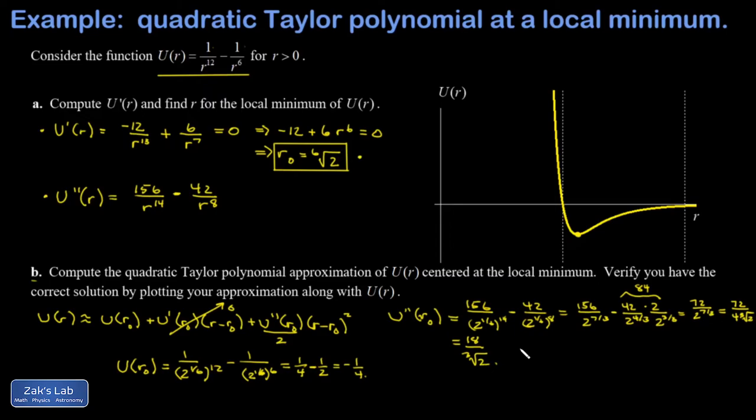So u''(r₀) = 18/∛2. Plugging into the Taylor polynomial: the constant term u(r₀) = −1/4, the linear term vanishes, and the quadratic term u''(r₀)/2 = 9/∛2. The final quadratic Taylor approximation is u(r) ≈ −1/4 + (9/∛2)(r − 2^(1/6))².